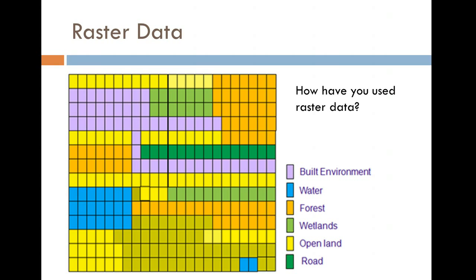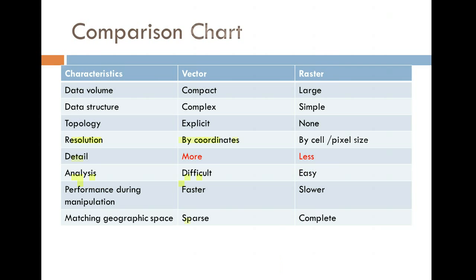Raster data - have we used it at all? Yes. Hillshade, viewsheds, DEM, contours - all that stuff. We kind of used raster data. In some ways this is considered a simplified format because it's just a grid - although these should be square, you can have rectangular but usually they're square. Each grid is representing some kind of land use or some kind of function. There are all different ways to show raster data.